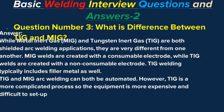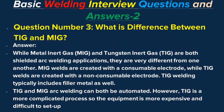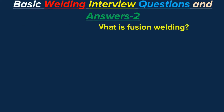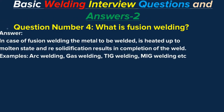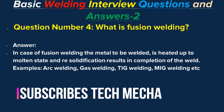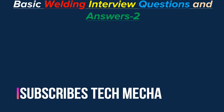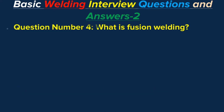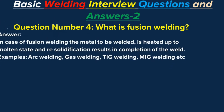TIG and MIG arc welding can both be automated; however, TIG is a more complicated process. Question number four: What is fusion welding? Answer: In fusion welding, the metal to be welded is heated up to a molten state and upon solidification the weld is completed. Examples include arc welding, gas welding, TIG welding, and MIG welding.